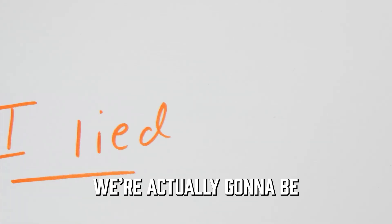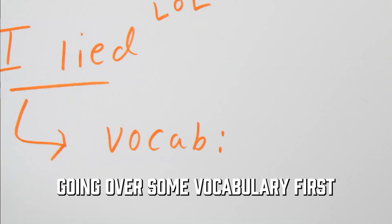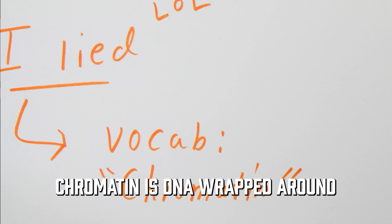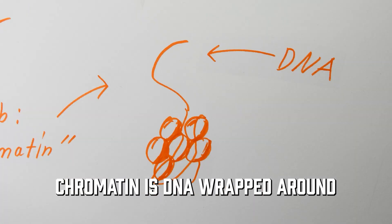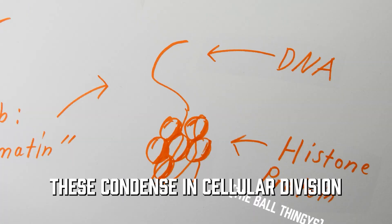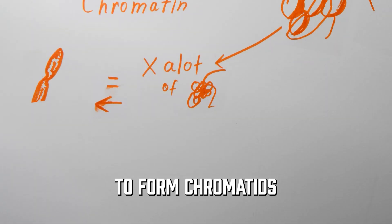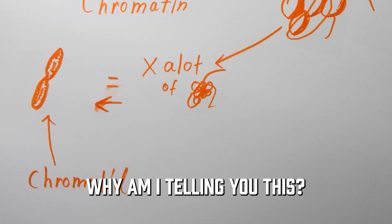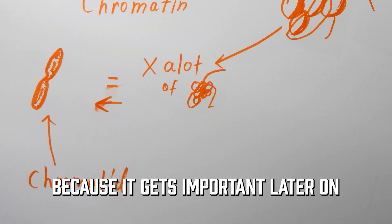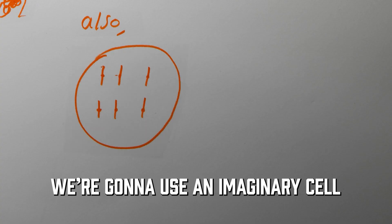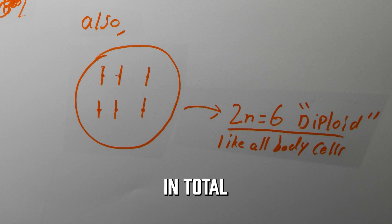I lied — we're actually going to be going over some vocabulary first. Chromatin is DNA wrapped around the histone proteins. These condense in cellular division to form chromatids. Why am I telling you this? Because it gets important later on. For the purpose of not losing my sanity, we're going to use an imaginary cell with 6 chromosomes in total for all illustrations.